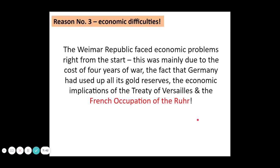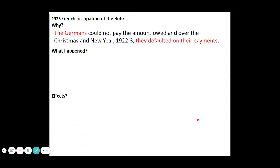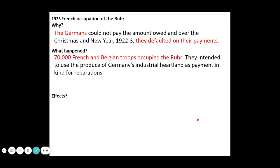Then we've got our economic problems. These begin because of the war — the British blockade during the war meant the German people were starving. There's a very famous photo of a horse being butchered in the streets for food. But these problems continue largely because of the reparations. Germany had already used up its gold reserves and had nothing to pay the French or the British with. This leads to the French occupation of the Ruhr in 1923. Germany couldn't pay its reparations owed between Christmas and New Year of 1922 to 23, they default on their payment, and this leads to French and Belgian troops occupying the Ruhr, intending to use Germany's productive industrial heartland to take payment in steel and coal.